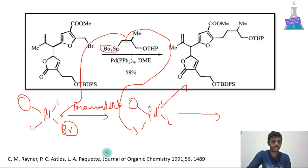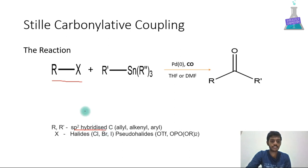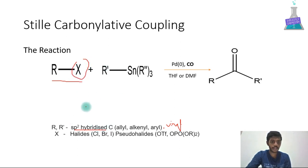Next is the Stille carbonylative coupling. It is similar to the Stille coupling reaction, but here carbon monoxide is also added. The RX alkyl halide has R as sp2 hybridized carbon, which may be alkyl, alkenyl, aryl, or vinyl. R' is also sp2 hybridized carbon, and X may be halides or pseudo-halides like OTf. In the presence of palladium and carbon monoxide, the coupling happens and a carbonyl group is also incorporated in the product.